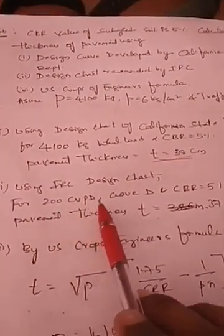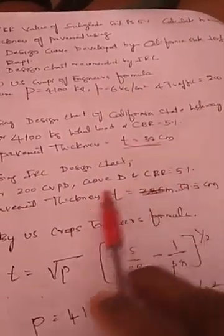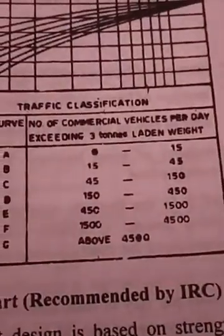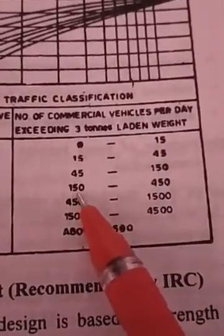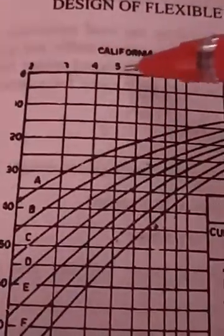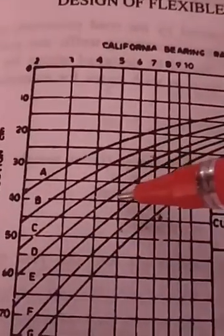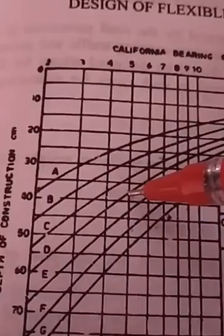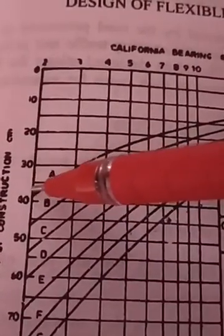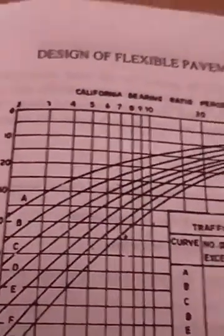Second method — using the IRC chart. The number of commercial vehicles per day is given as 200 CVPD and CBR remains 5%. For CVPD of 200, which falls in the range 150 to 450, we refer to curve D. At CBR value of 5 on the x-axis, extending to meet curve D and reading the y-axis gives a value between 37 and 38 cm. Therefore, the thickness is taken as 37.5 cm using the IRC design chart.